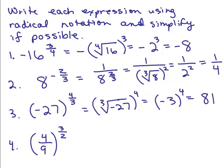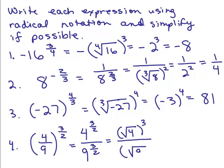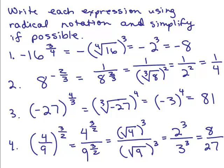The last one: 4/9 to the 3/2. We take the numerator to the 3/2 over the denominator to the 3/2. In the numerator: square root of 4 cubed — square root of 4 is 2, so 2 cubed is 8. In the denominator: square root of 9 cubed — square root of 9 is 3, so 3 cubed is 27. Our answer is 8/27.